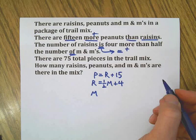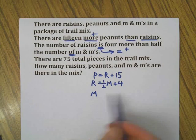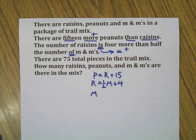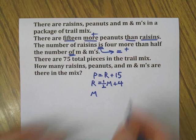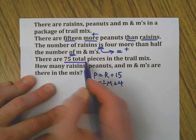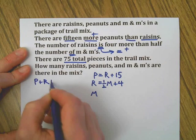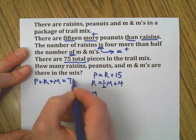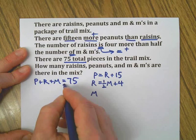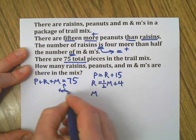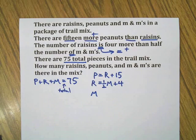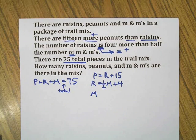Anyway, raisins is four more than half the number of M&Ms, and I'm going to use the letter M to represent the M&Ms. It doesn't tell us anything else about them, so we are going to solve this problem. Oh, and one more thing: there's 75 total pieces, which means P + R + M = 75. That means total. Lots of different synonyms for the equal sign—'is' and 'total' both mean equal sign.